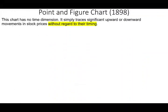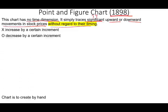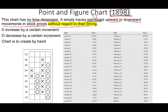The point and figure chart is one of the oldest charts on Wall Street. It was created in 1898, and you can see why — this chart has no time dimension. Therefore, you're not looking over a particular period of time. It simply traces significant upward or downward movements in stock prices without regard to their timing. We're going to place an X every time we have an increase by a certain increment and an O every time we have a decrease by a certain increment. This chart can be created by hand, which is why it was created in 1898 before data analytics tools existed.